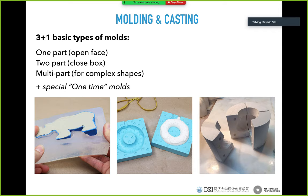For any kind of molding and casting, I will show you three plus one basic types of mold. The first, the simplest, is a one-part mold, also called open face. Then there is the two-part mold, sometimes called a closed box. Then a multi-part mold made for more complex shapes. I will also show you a special one-time mold that you can only use once.